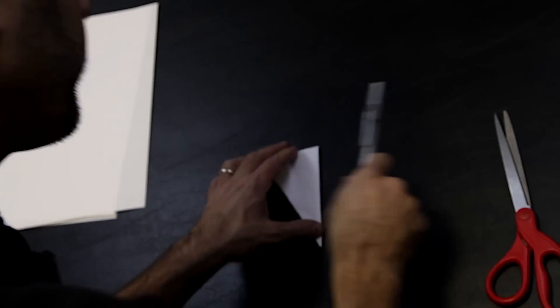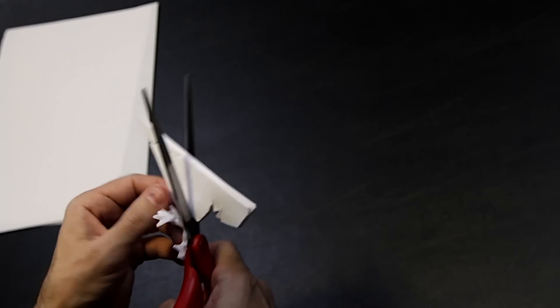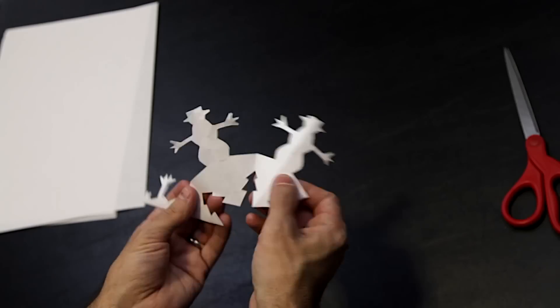Lightly draw half of the shape along one of the folded edges. Think of anything else that you want to include in your snowflake design. Carefully cut out the shapes and unfold your work of art.